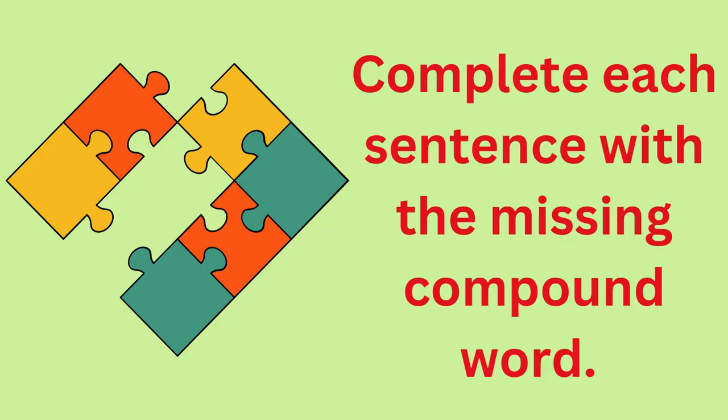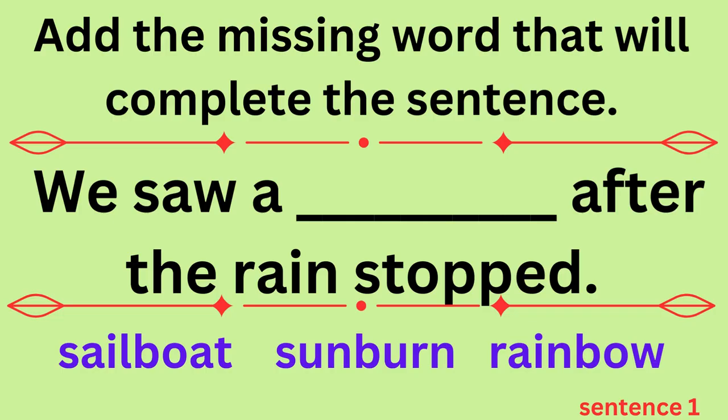Now we will complete adding the missing compound words to context through your turn fill-in-the-blank sentences. Sentence one: we saw a blank after the rain stopped. Would the answer be sailboat, sunburn, or rainbow?